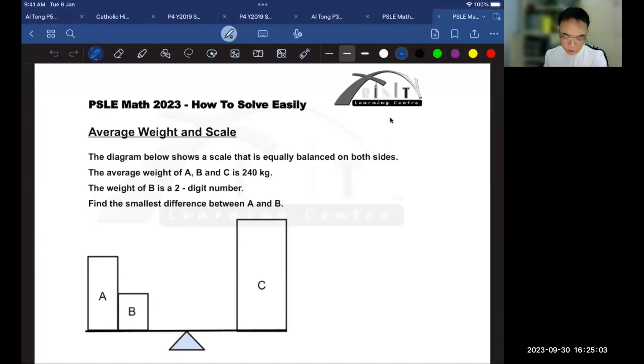As usual, the most important thing is to underline the keywords to make sure you don't miss any information. Let's begin with that. The keywords to this question are: the diagram below shows a scale that is equally balanced, meaning the total of A and B is equal to the weight of C.